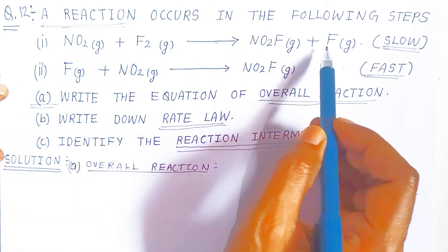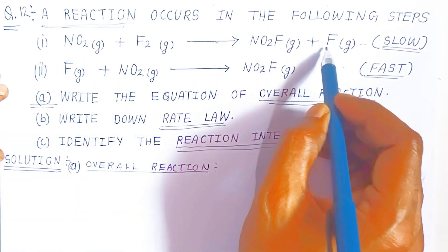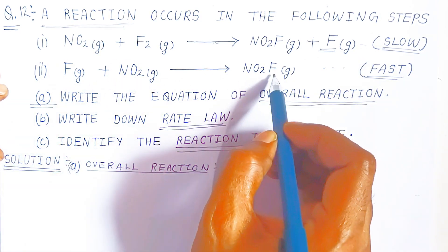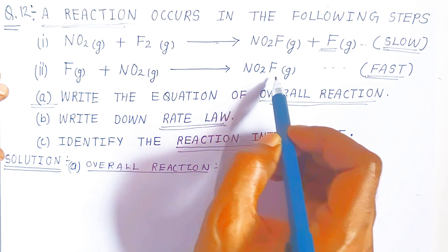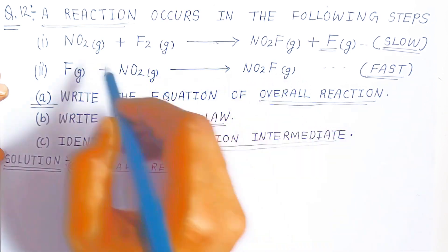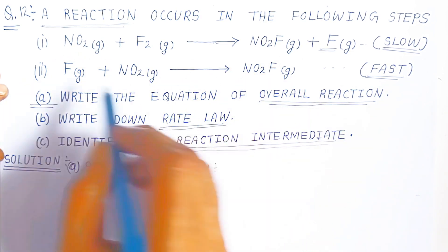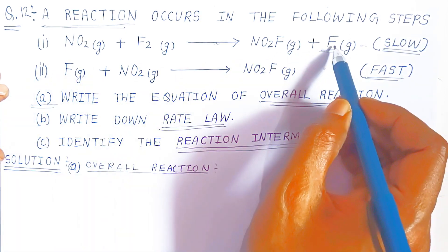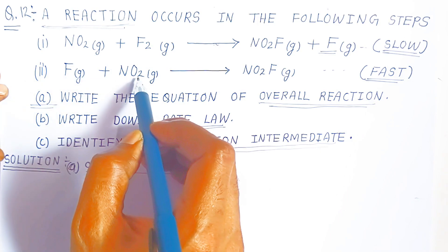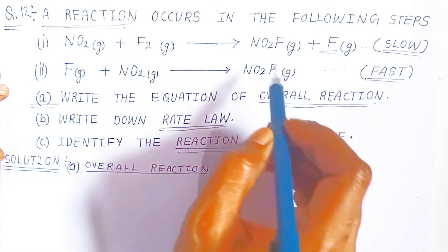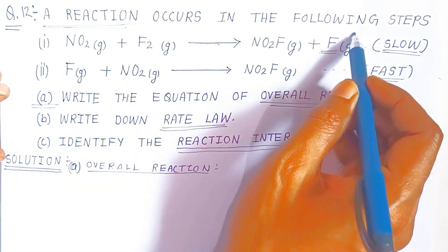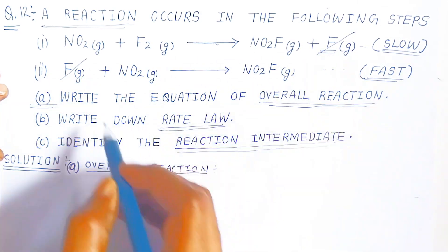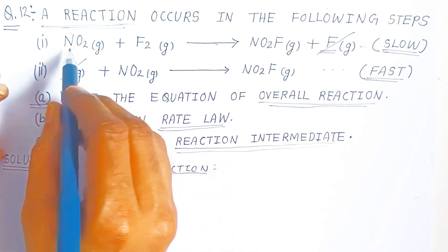In step one, the reactants produce nitryl fluoride as product. In step two, fluorine gas combines with nitrogen dioxide forming nitryl fluoride. Now, fluorine is present on the product side of step one and it reacts again in step two — so you cancel those two F terms.